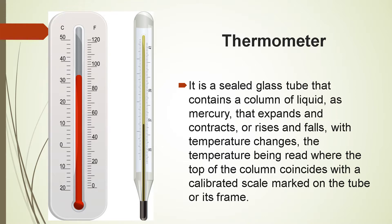When the bulb is inserted into the object, depending upon the temperature of the object, the mercury will expand or contract. When the mercury expands, its level rises in the capillary tube, and when mercury contracts, its level falls down in the capillary tube. The level of mercury in the capillary tube is read where the top of the column coincides with the calibrated scale mark on the tube or its frame.